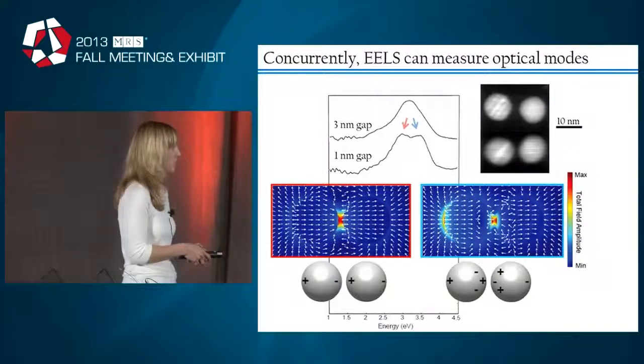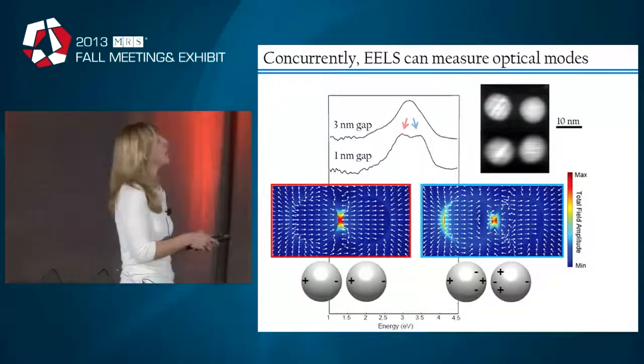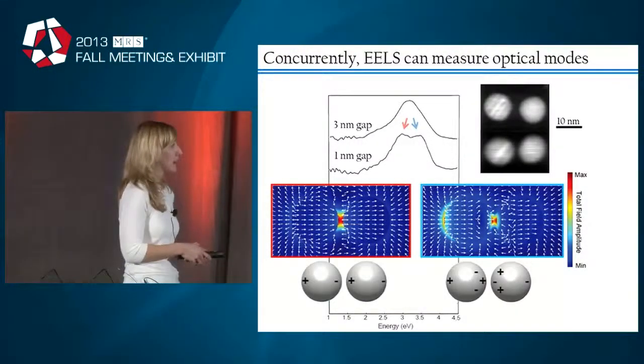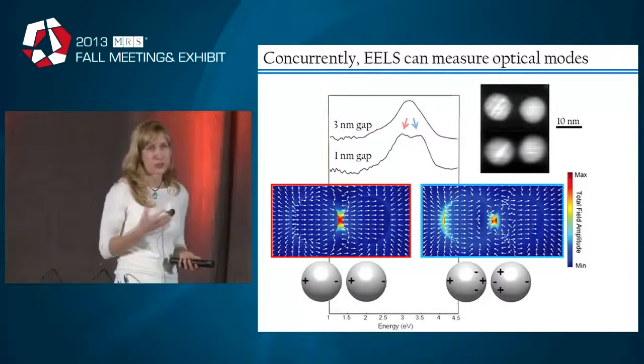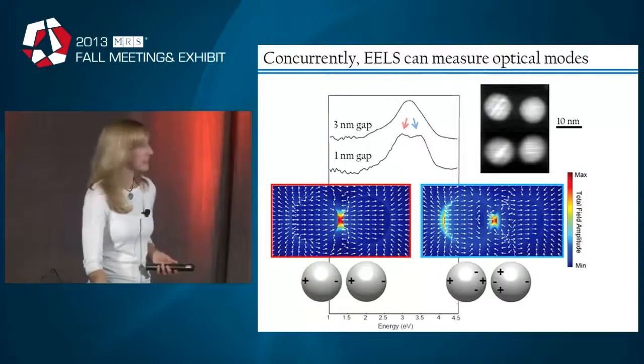The charges are distributed across the particles. You essentially have two dipoles that are coupled longitudinally across the gap. This higher order mode corresponds to basically a quadrupole in each particle, again where you have a large total electric field amplitude in the center of the particles.